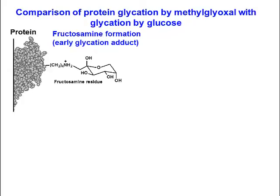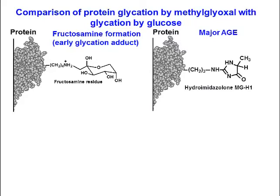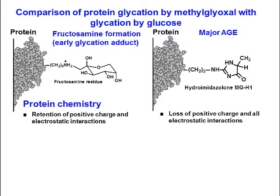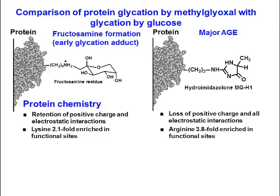Here I compare the characteristics of protein glycation by methylglyoxal and glucose modification. Looking at the protein chemistry, glycation by glucose retains positive charge and electrostatic interactions, while methylglyoxal glycation loses positive charge and all electrostatic interaction. Lysine is 2.1-fold enriched in functional sites, while arginine residues are 3.8-fold enriched in functional sites.